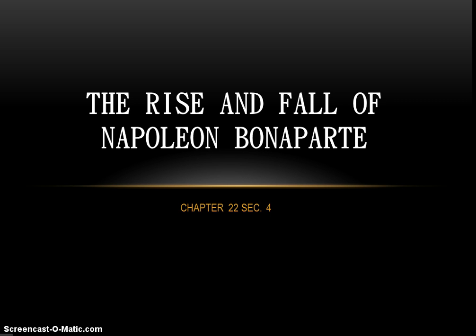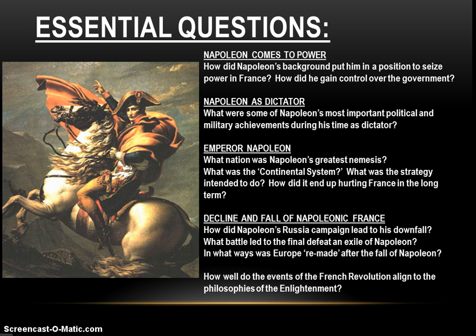His story is the topic of today's screencast — the rise and fall of Napoleon as the final chapter in the era of the French Revolution. We're going to break it down into four parts: his backstory and how he comes to power, Napoleon's reign as dictator, Napoleon as emperor (which he crowns himself in 1804), and finally the circumstances that lead to his decline and fall.